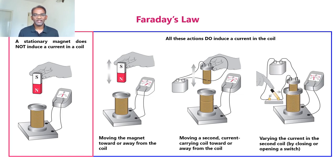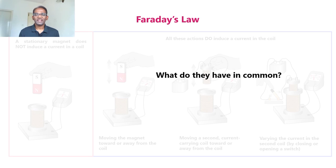The third experiment has a slight variation. In this case, we'll be connecting a switch to the second coil, and the second coil will be permanently inserted into the first coil. When we switch on or switch off, we can actually see a deflection in the galvanometer — when we switch on, the deflection will be to one side, and when we switch off, the deflection will be to the other side. So what do all these have in common?